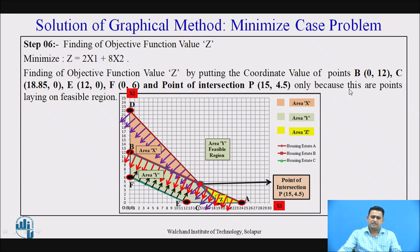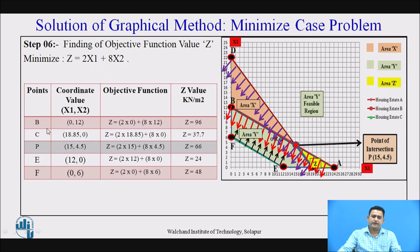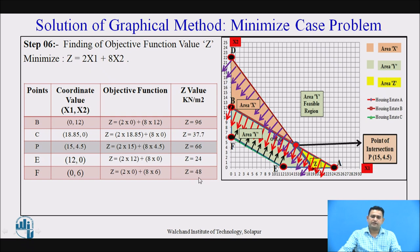Now let us place these coordinate values into the objective function. The table shows the various points B, C, P, E, and F with their coordinate values. Substituting into the objective function, we get the value of Z: for point B, Z = 96; for point C, Z = 37.7; for point P, Z = 66; for point E, Z = 24; and for point F, Z = 48.